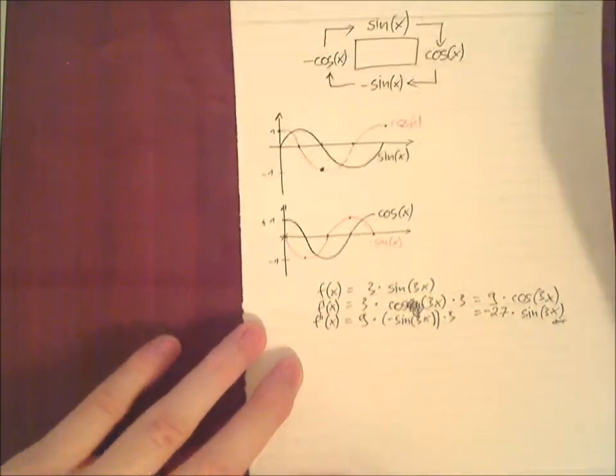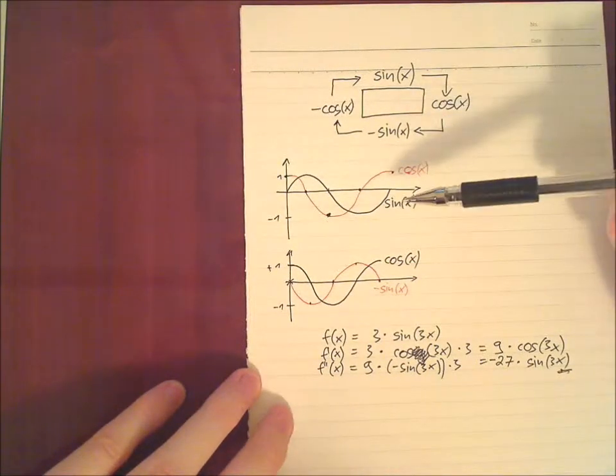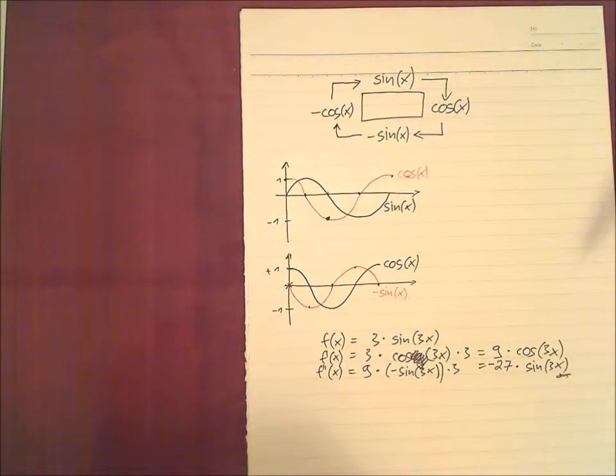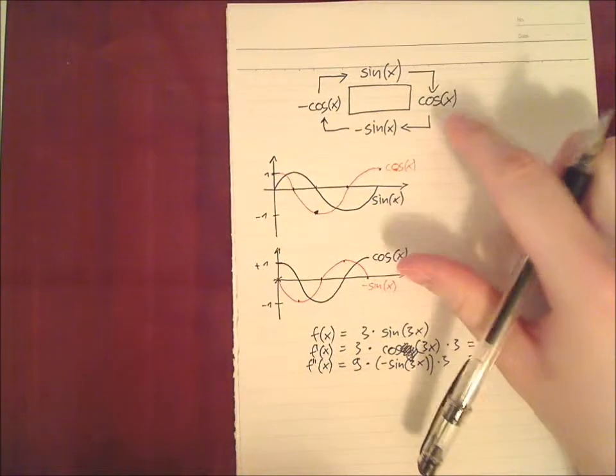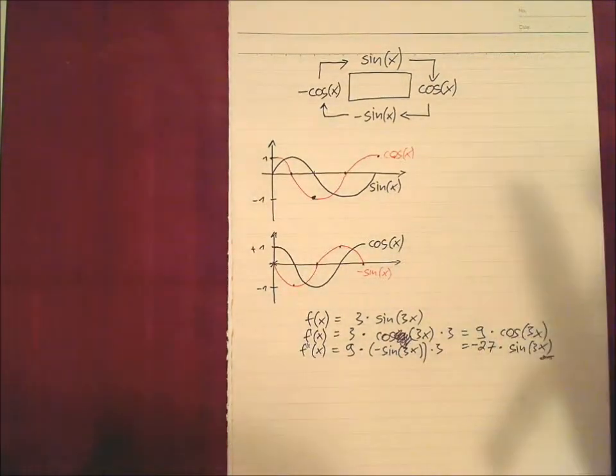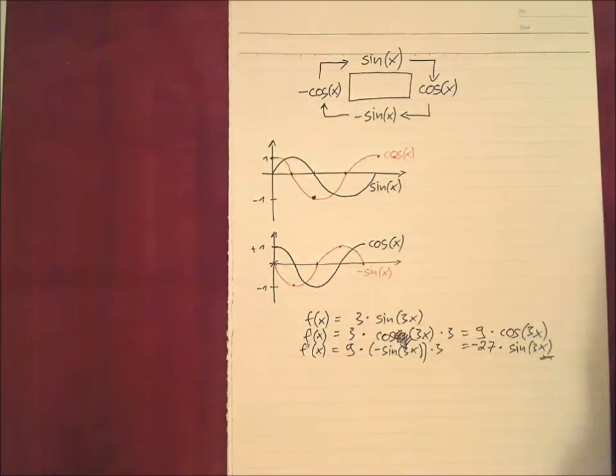So I would just recommend you to learn by heart this rectangle, and to be able, if you have to, to draw these two pictures. But maybe not in an exam where you just have to differentiate sine or cosine. And so with a rectangle, you can be pretty fast in exams. And it's not that difficult if you just remember how it works.